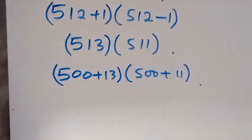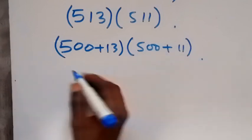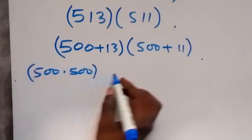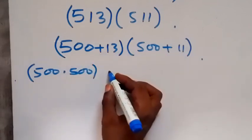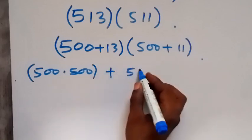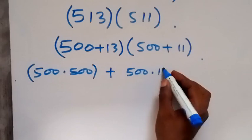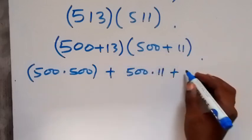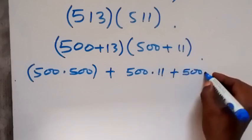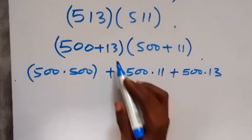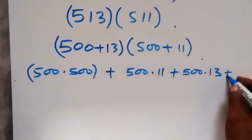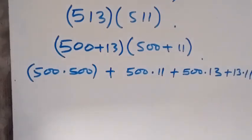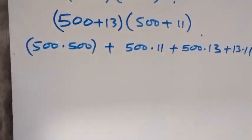Then we can open this bracket like this. We use 500 to open this, and this is 500 multiply by 500, then also 500 multiply by 11. So we have plus 500 multiply by 11, and also 13 we multiply now. We have plus 13 times 500, plus 13 times 11. And from here we can multiply 500 by 500, that gives us 250,000.